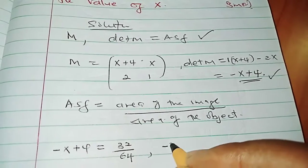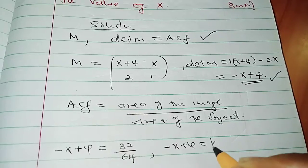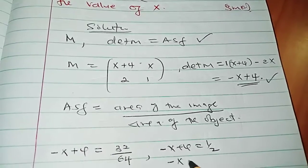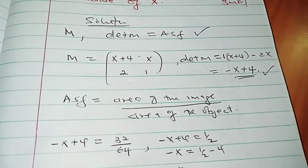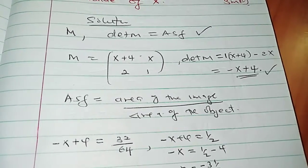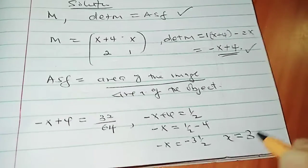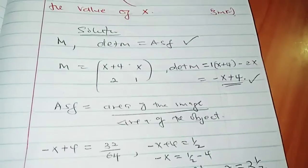And this is quite trivial. We have -x + 4 = 1/2. Solving for x, we have -x = -3.5. So x equals 3.5. And that's the answer.